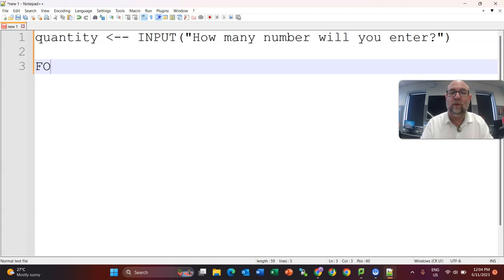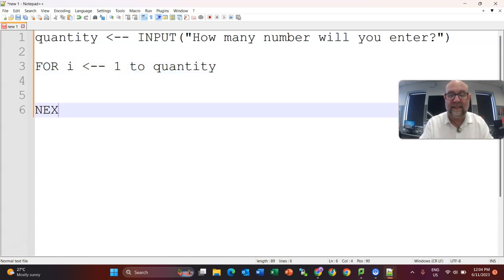Then I'm going to have a for loop and I'm going to say for i equals 1 to quantity. So however many they put in, if they want to add 10 numbers, then it's going to go through this loop 10 times. Now to close off this, I'm going to say next i, so that it's going to move forward by 1, and then I'm going to say end for.